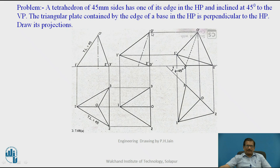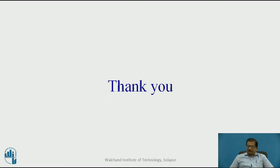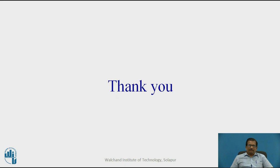Here we have made the face perpendicular to HP and the base 45 degrees to VP. Since this is a point view, the line will be a true length line, so there is no need to calculate apparent length. Project upwards and complete the drawing. For this problem, we have used Engineering Drawing by P.H.A. Thank you.